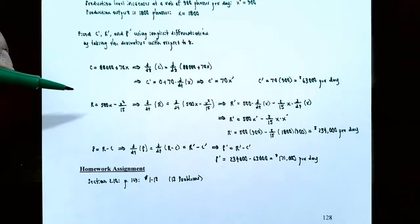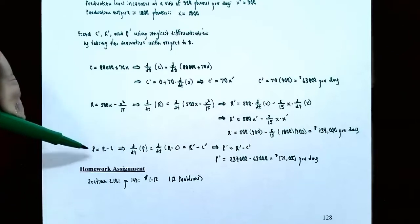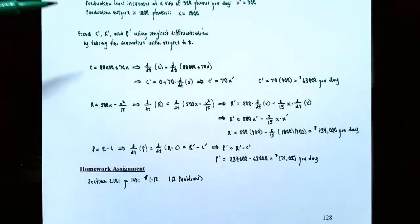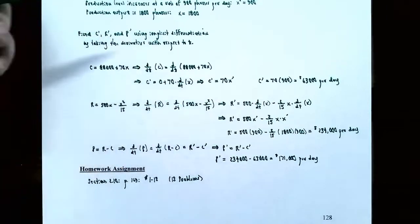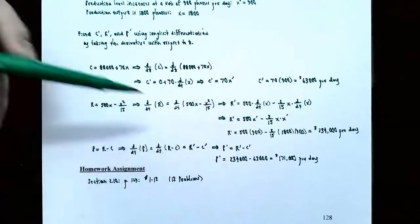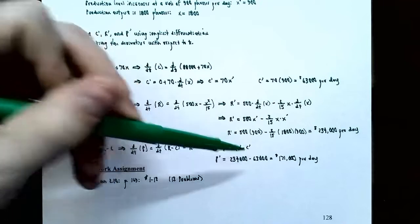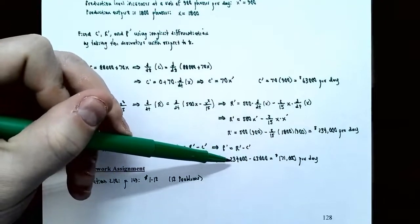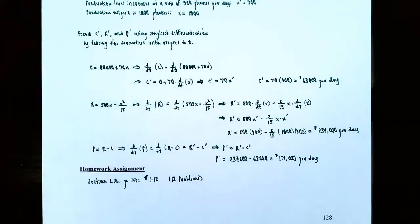For profit, since P equals R minus C, taking the derivative with respect to time gives P prime equals R prime minus C prime. We already found R prime equals $234,000 per day and C prime equals $63,000 per day. So P prime equals 234,000 minus 63,000, which equals $171,000 per day. The profit is changing at $171,000 per day.